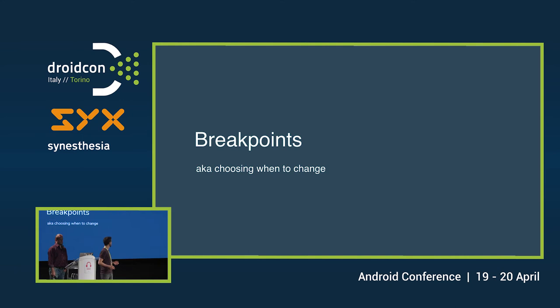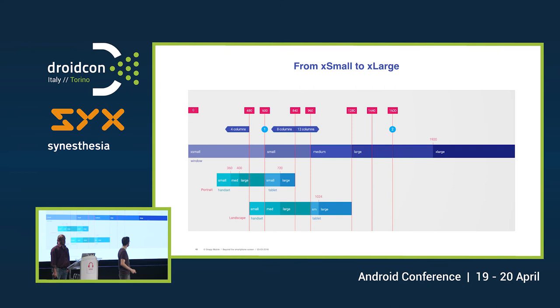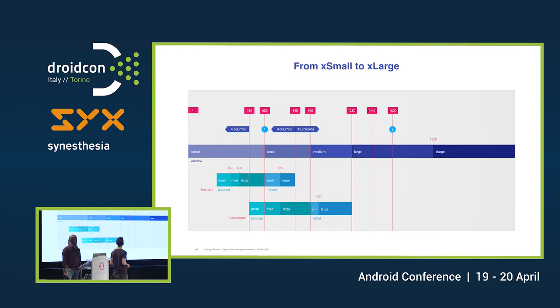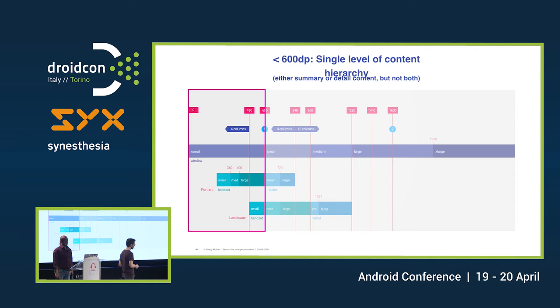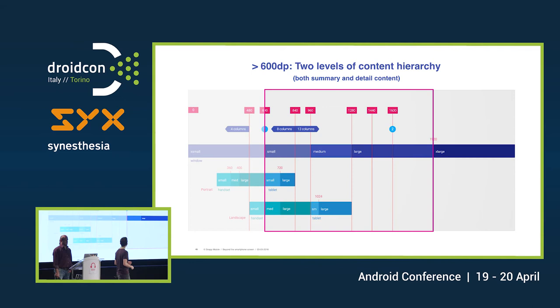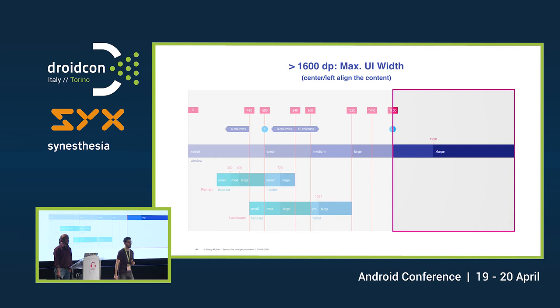So where do we start in building scalable layouts? Let's start from breakpoints — deciding when we want different layouts for different resolutions. Looking at the Material guidelines, they suggest that for smaller screens up to 600dp we should use one single view; more than 600dp we can use a split view or different views; and over 1,600dp we should fix the width and center or left-align our layout.